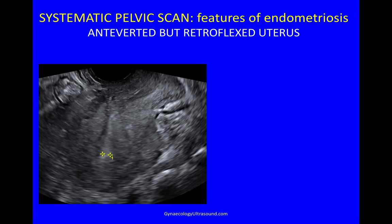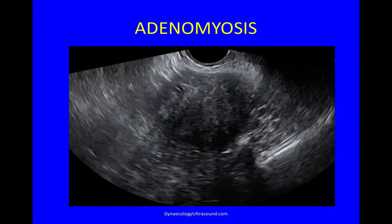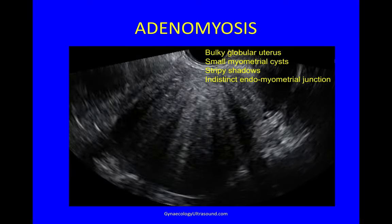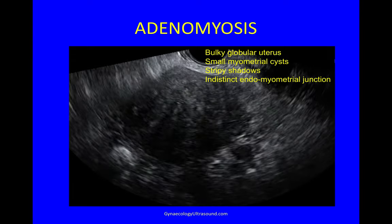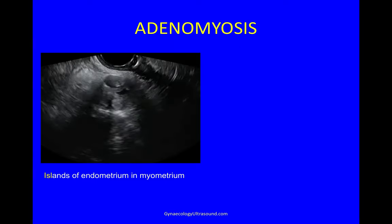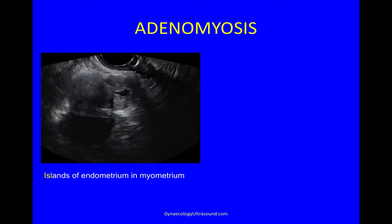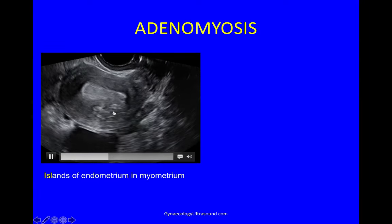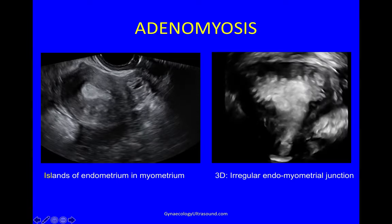We start with a systematic pelvic scan looking for features of endometriosis. If a uterus is anteverted but retroflexed, you've got to think about why it is being pulled backwards — it's usually because of adhesions. The other thing to look for is adenomyosis. You can see here features of diffuse adenomyosis causing a bulky globular uterus, small myometrial cysts, stripy shadows, and a very indistinct endomyometrial junction. It can look differently — you can have islands of endometrium in the myometrium, and if you do a 3D image you can see a very irregular endomyometrial junction.